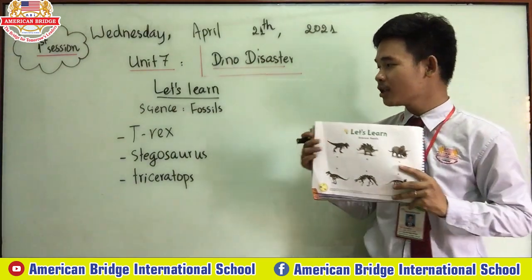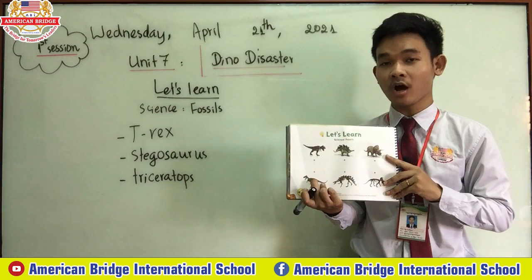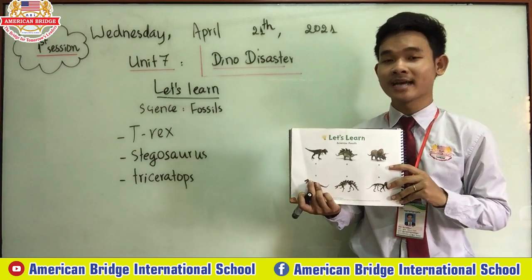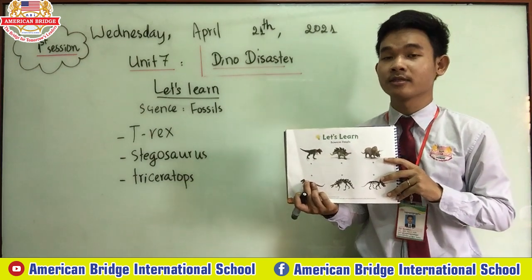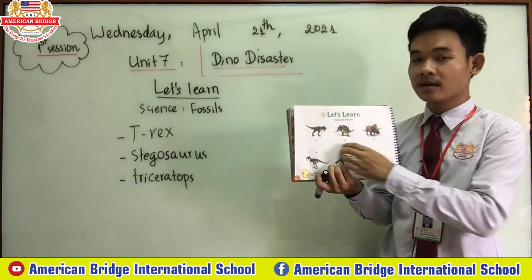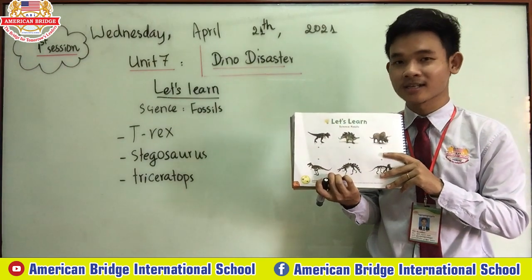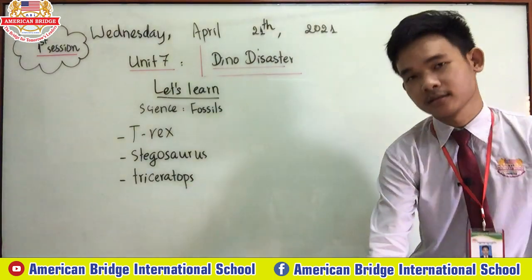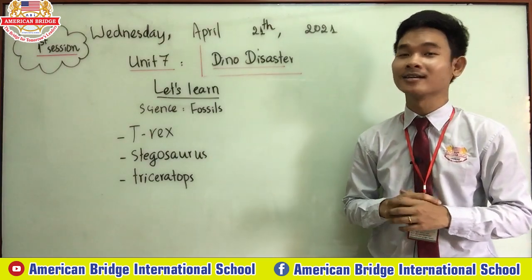So today we've learned about science. We talked about fossils of dinosaur. We cannot see dinosaurs today because they are extinct. But we know that there is the presence of dinosaurs on earth because we can see the skeletons of dinosaur on earth — we call them fossils. So now it's time to finish our class for the first session. Let's see each other on the second session.